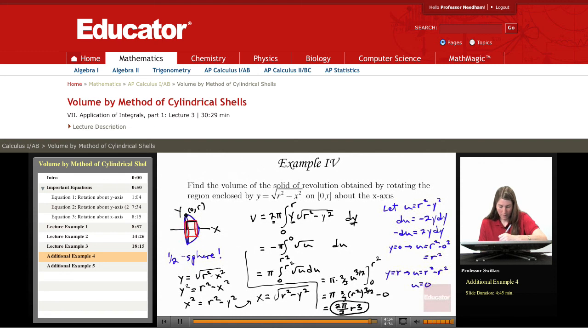And as I remarked in the other tutorial, the one on disks and washers, we know that the volume of a full sphere is four thirds π r cubed. The volume of a half sphere is two thirds π r cubed. And we derived it.